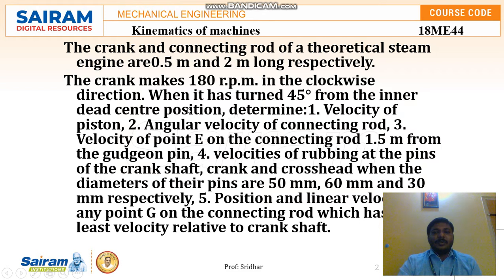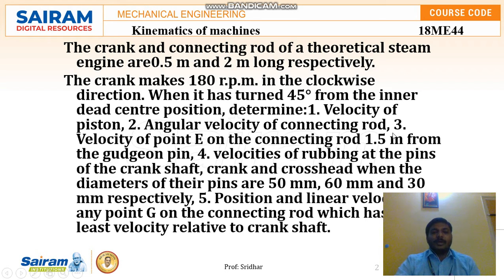We need to determine: first, the velocity of the piston; second, the angular velocity of the connecting rod; third, the velocity of point E on the connecting rod at 1.5 meters from the pin; fourth, the velocities of rubbing at the pins on the crankshaft, crank, and crosshead with pin diameters of 50 mm, 60 mm, and 30 mm respectively; and fifth, the position and linear velocity of point G on the connecting rod which has the least velocity relative to the crank.